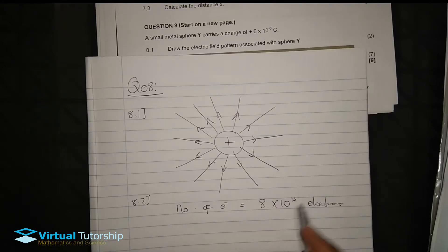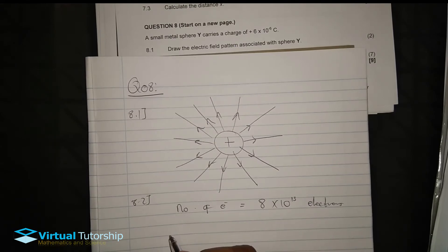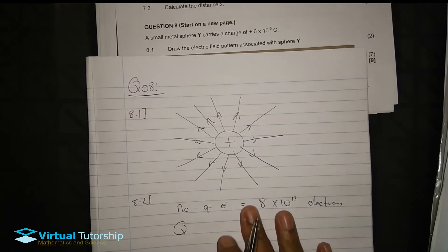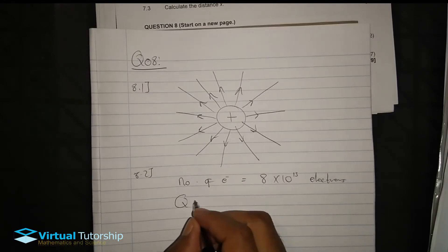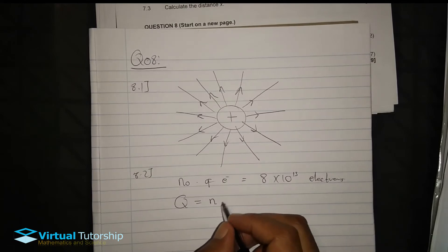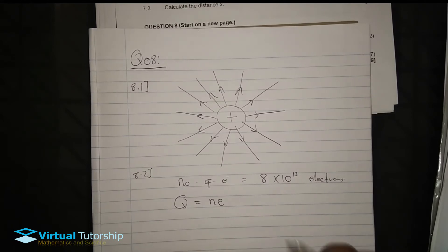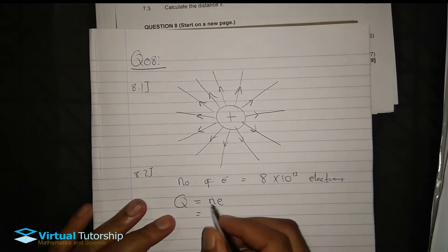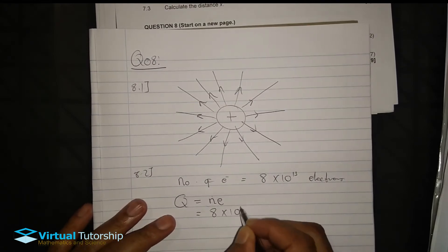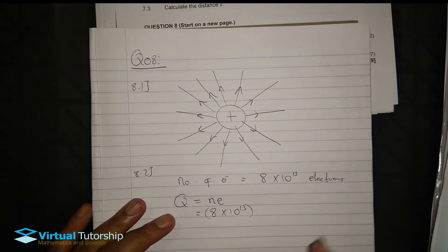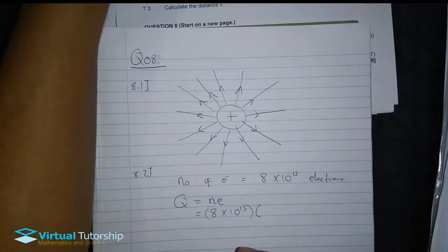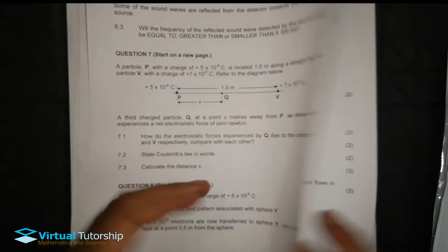So, a transfer of 8 times 10 to exponent 13 electrons. Right, a transfer of electrons to sphere Y. So we need to find the new charge on Y. Right. So, a number of electrons transferred, not the charge, not the actual charge.